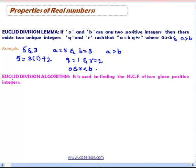Now we will learn Euclid division algorithm. It is used to find the HCF of two given positive integers. HCF means highest common factor.